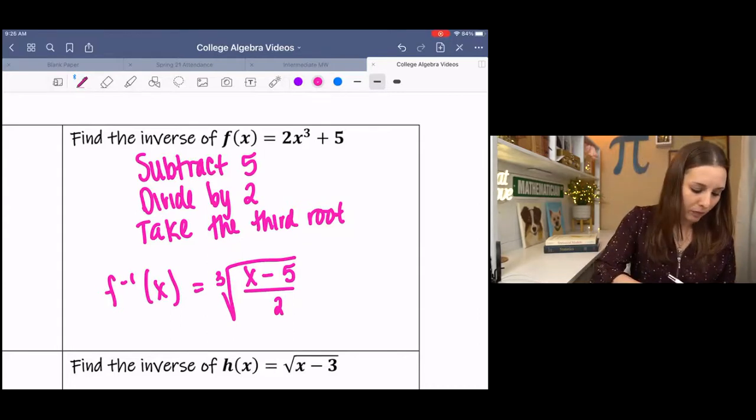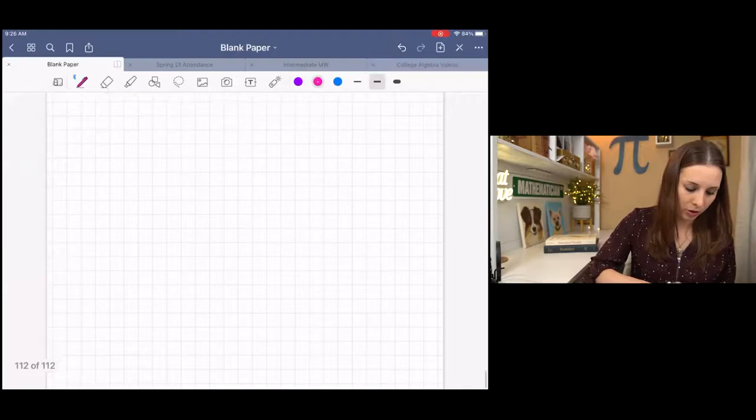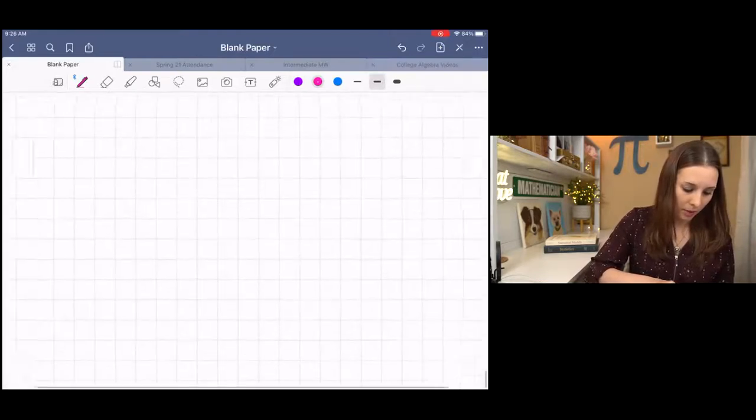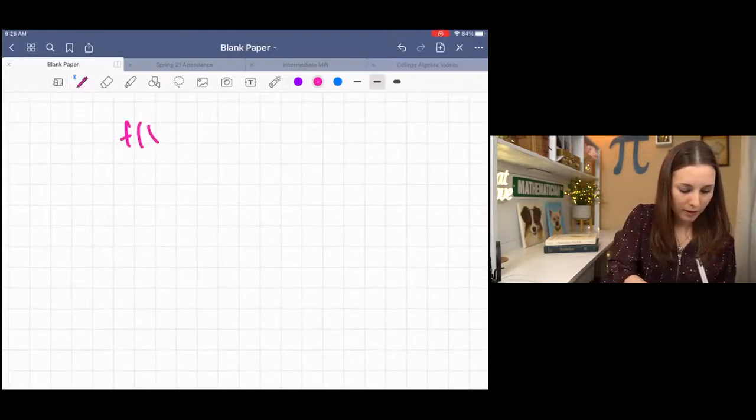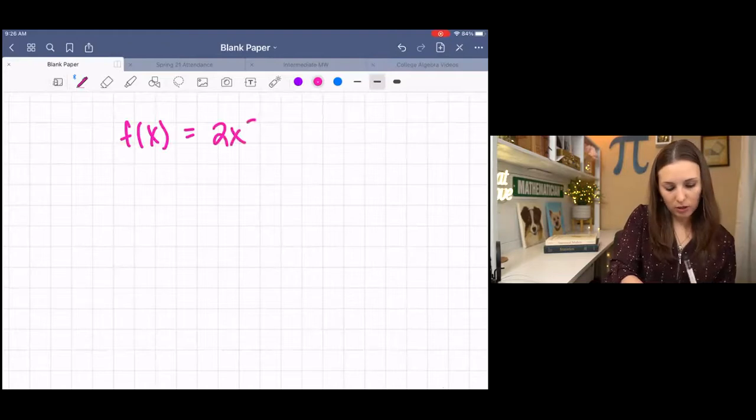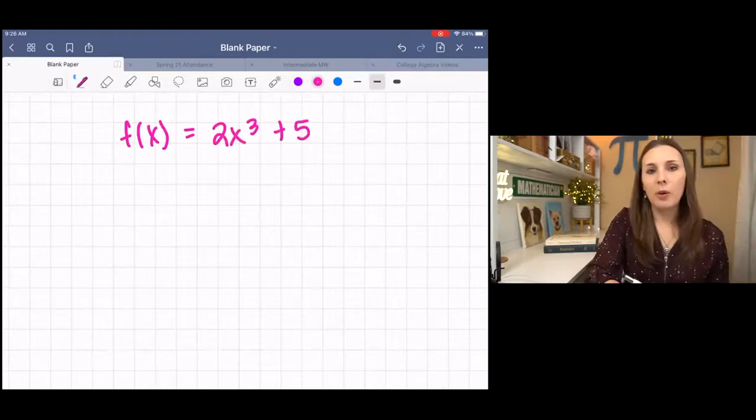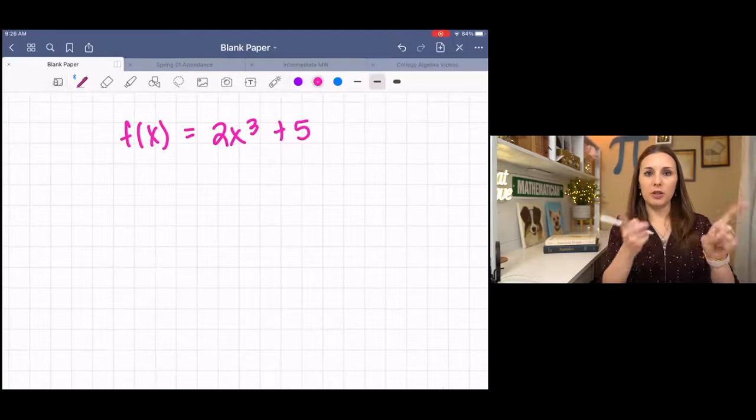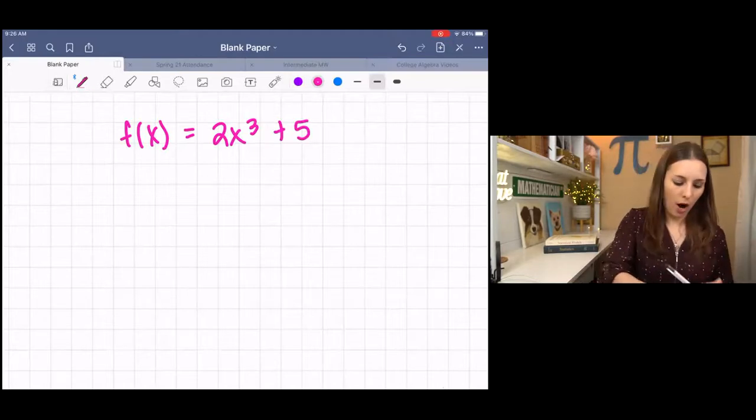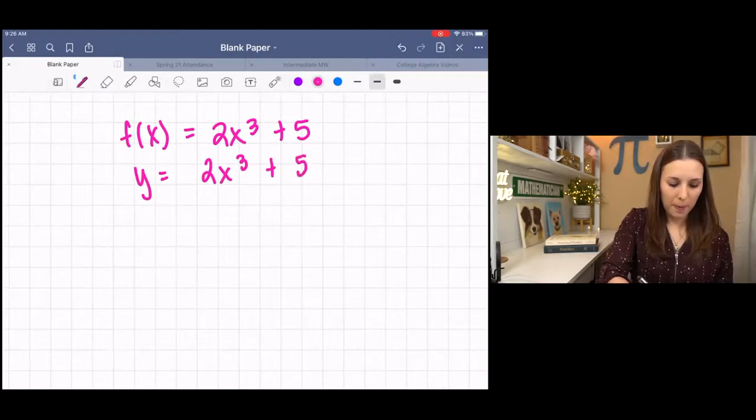Now, the other way, this is the way that I learned, we have f(x) equals 2x to the third plus five. Now, we know that inverses mean opposites, so we're kind of flip-flopping X and Y. I'm going to rename this Y for the sake of the problem, and I'm switching X and Y.